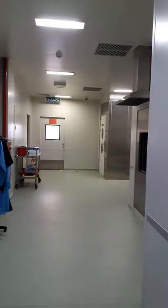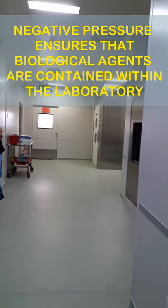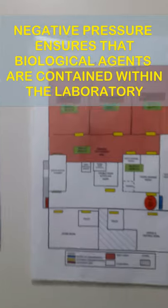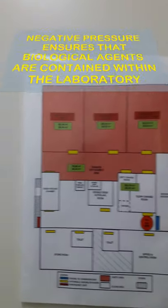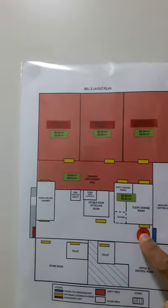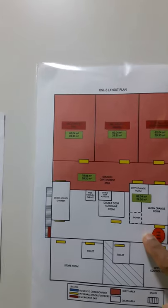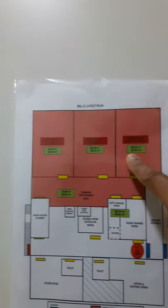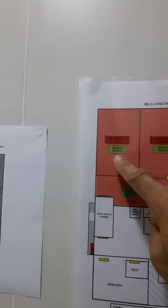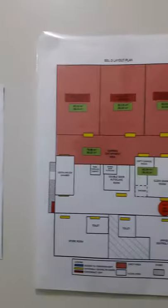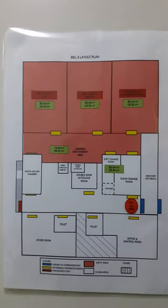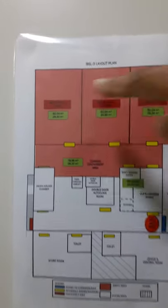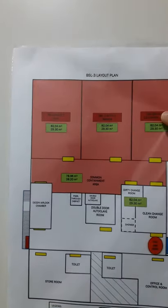Engineering controls based on directional airflow are a common component in all biological safety laboratories. As we progress through the laboratory, the directional airflow will continue to drop. We have entered at this location where the pressure is negative, and as I proceed into the suites or the laboratory areas, the pressure will keep dropping to a lower and lower negative pressure zone. This is the way in which pathogens are confined to this region of the laboratory.